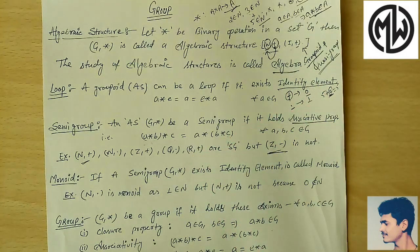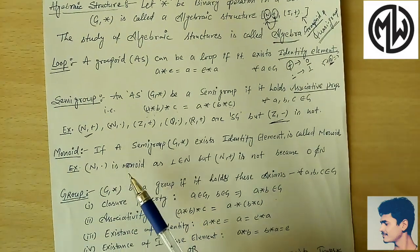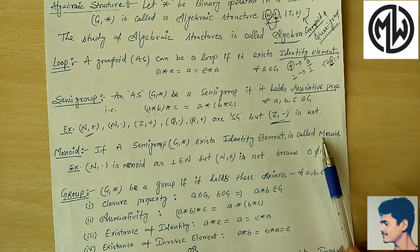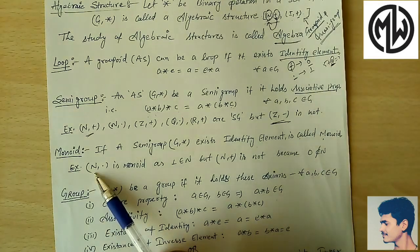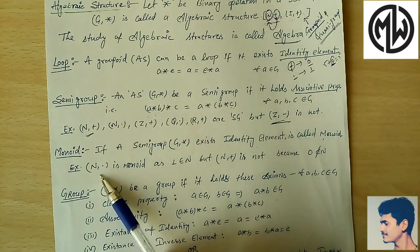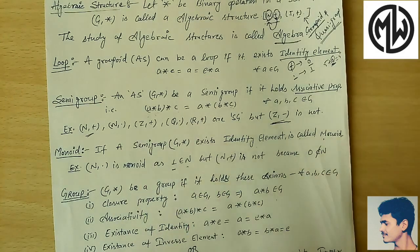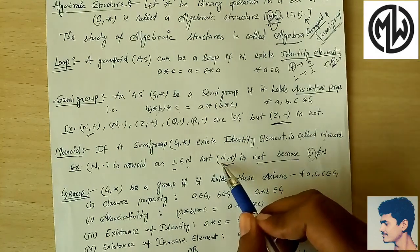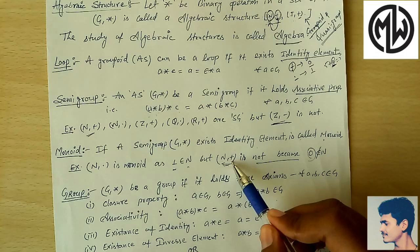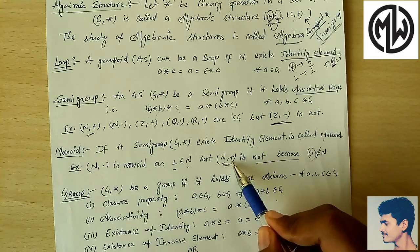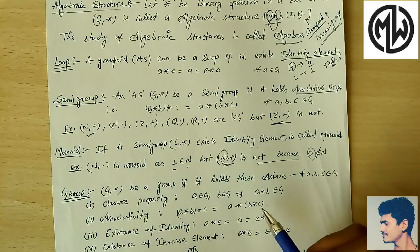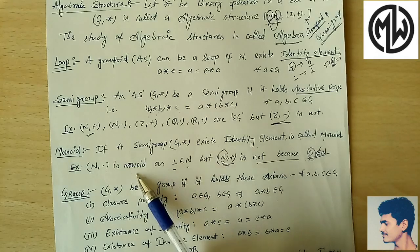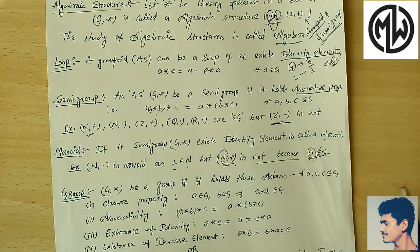Next is monoid. If a semi-group (G, star) also has an identity element, then it is called a monoid. For example, (N, ·) is a monoid because 1 belongs to natural numbers — and 1 is the identity element for multiplication. But (N, +) is not a monoid because 0 does not belong to natural numbers, and zero is the required identity element for addition. So (N, ·) is a monoid but (N, +) is not.